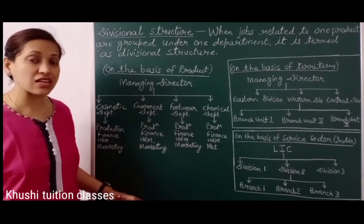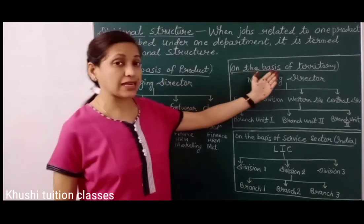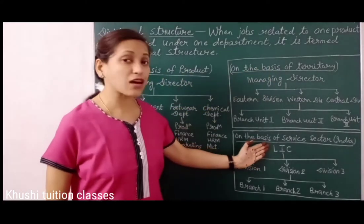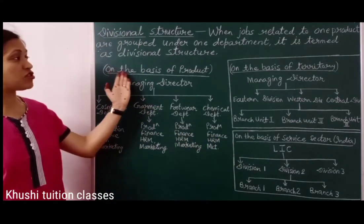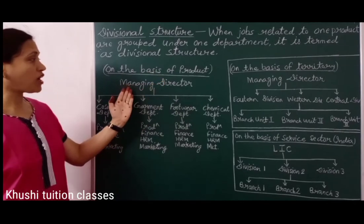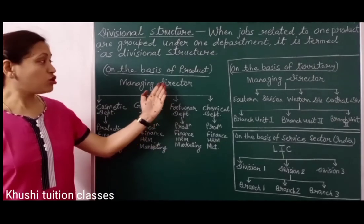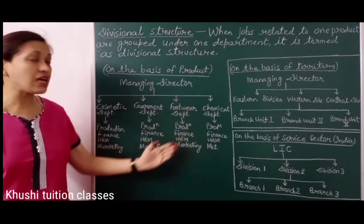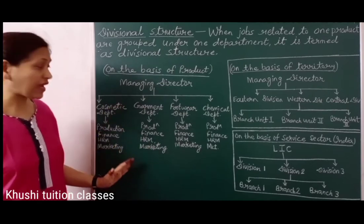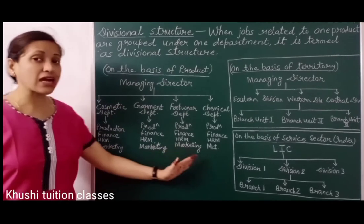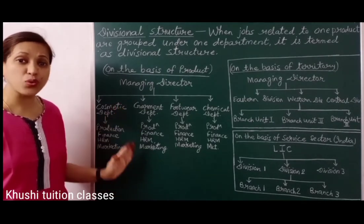Now we see examples of divisional structure — here, divisional structure on the basis of product. This organization में top management होगा, जिसे यहां पर है managing director, जो business organization के सभी product lines को control करेगा. अब हमारी organization में four product lines हैं. हर product line, एक department, एक division, एक unit है.